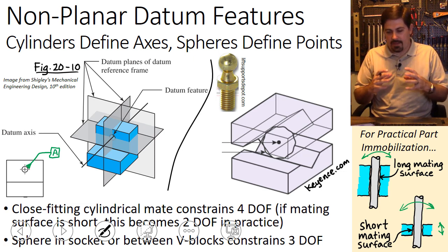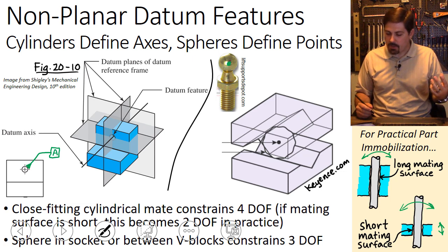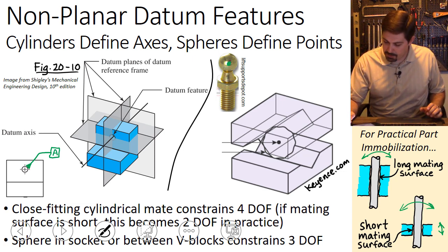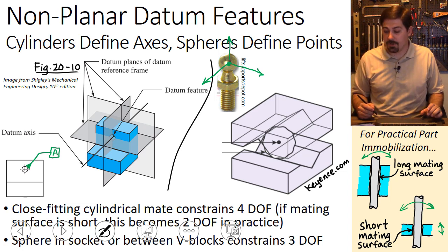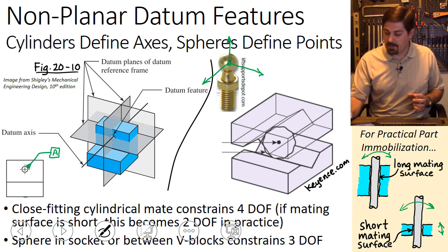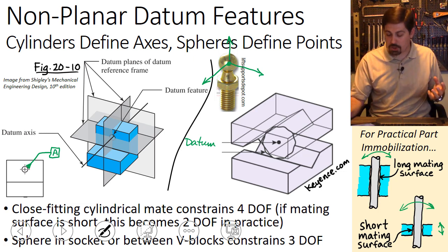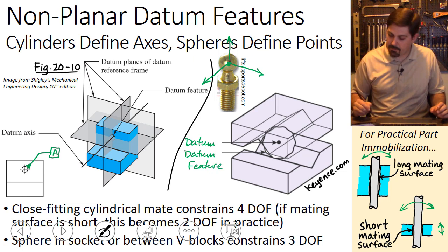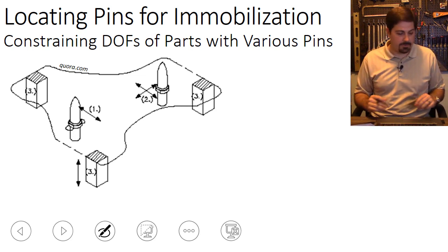A spherical contact defines a datum point in the middle of the sphere. Whereas a long cylindrical mate constrains four degrees of freedom, a spherical contact constrains three degrees of freedom — but all three are translations. Once you place a sphere between two V-blocks, you constrain all three translational directions. The point in the middle of the sphere is the datum, while the spherical surface is the datum feature, and the datum label should be attached to the spherical surface.